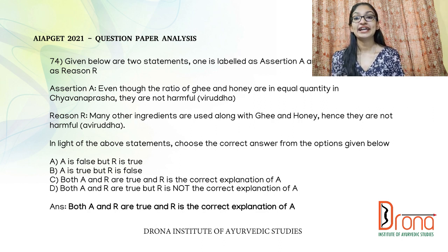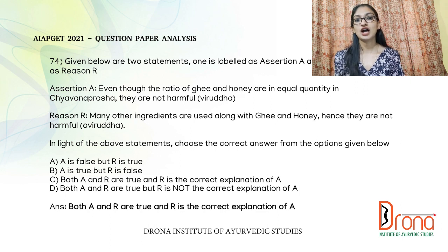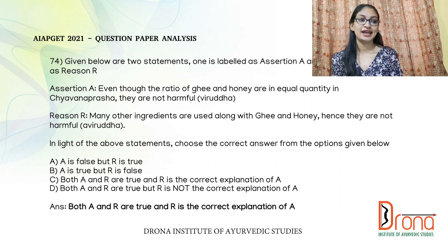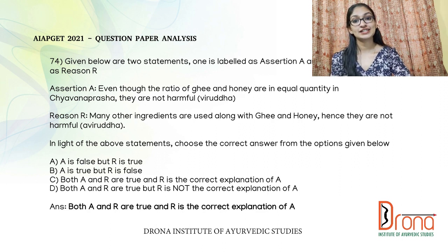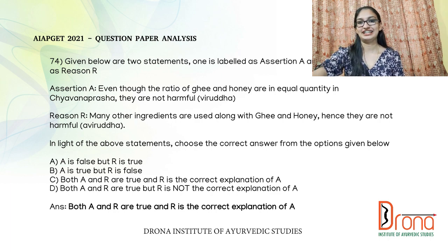The next assertion and reasoning question: in the assertion it is told that even though ghee and honey are in equal quantity in Chyavanprash, they are not harmful — they are not virudha. This is a true statement. The reason states that many other ingredients are used along with ghee and honey, hence they are not virudha. This is also true. The answer is both A and R are true, and R is the correct explanation of A.